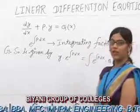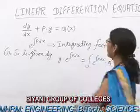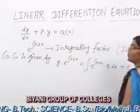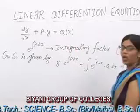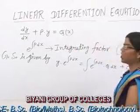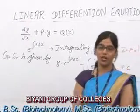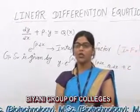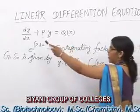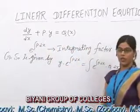What is a linear differential equation? An equation of the form dy/dx plus p times y is equal to q, where p and q are functions of x, is called a linear differential equation of first order. A differential equation is linear in which the dependent variable y and its derivative occur in first degree.